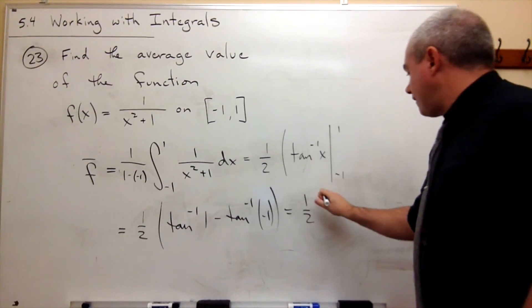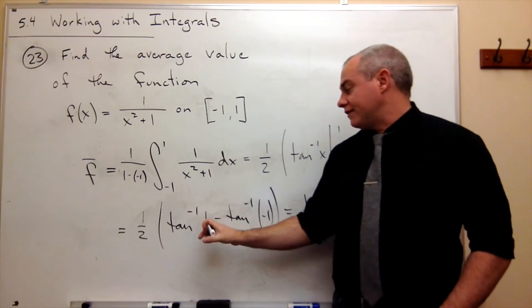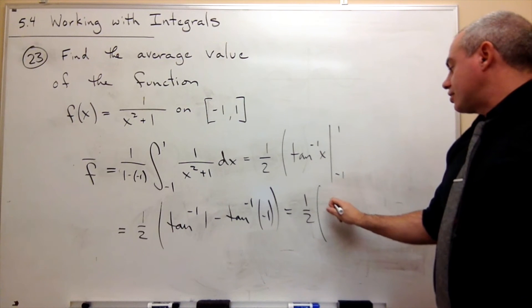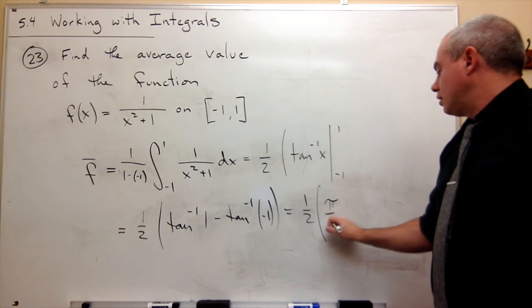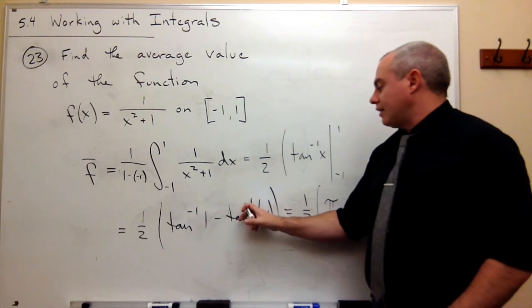So we still have that 1 half. In other words, the tangent of what angle gives me 1? And the answer is pi over 4, minus tan inverse of minus 1.